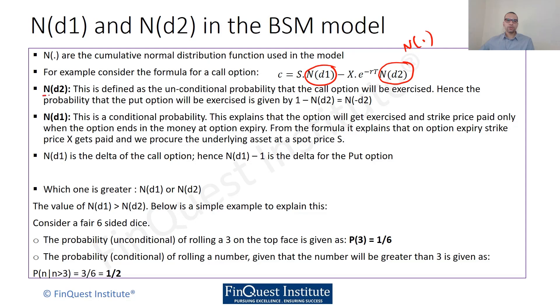Starting with N(d2), it can be thought of as an unconditional probability measure that the call option will be exercised. Since we are looking at it from an unconditional probability perspective, we are basically saying this is the probability that the call option will be exercised, i.e., this strike price X will come into play. This was for a call option perspective.